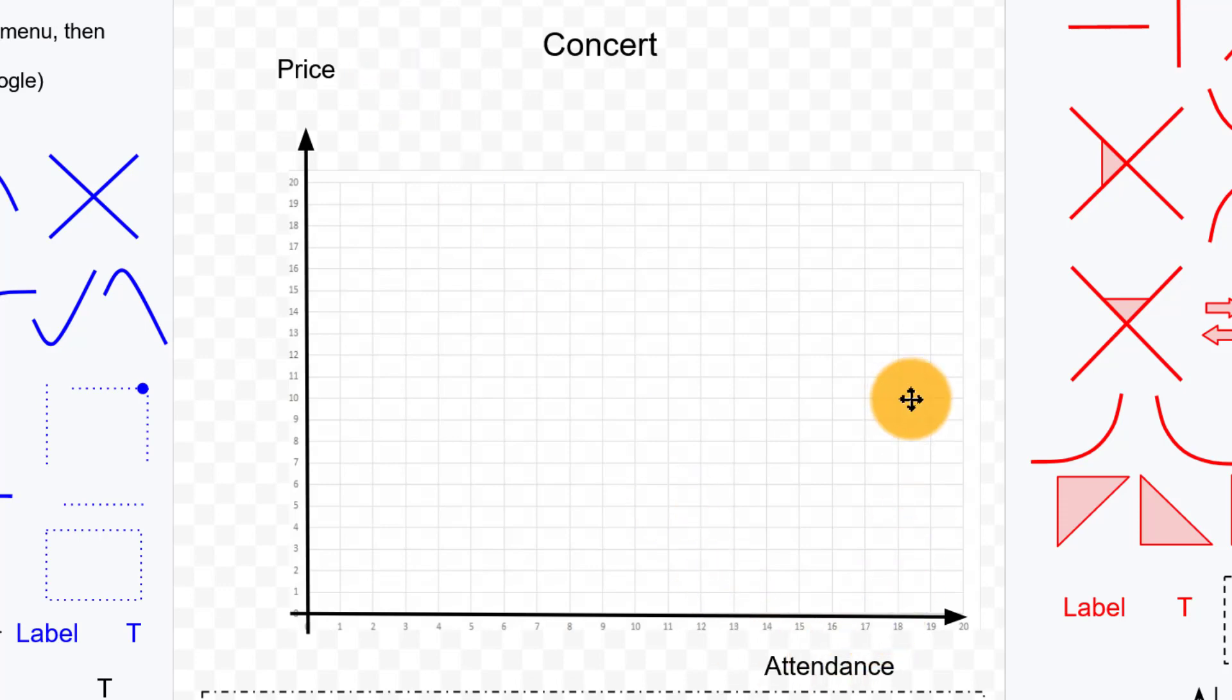Now, in some science classes, you'll be taught that a good rule of thumb, and this is indeed a good rule of thumb, is that you should normally think about putting the independent variable on the x-axis and the dependent variable on the y-axis.